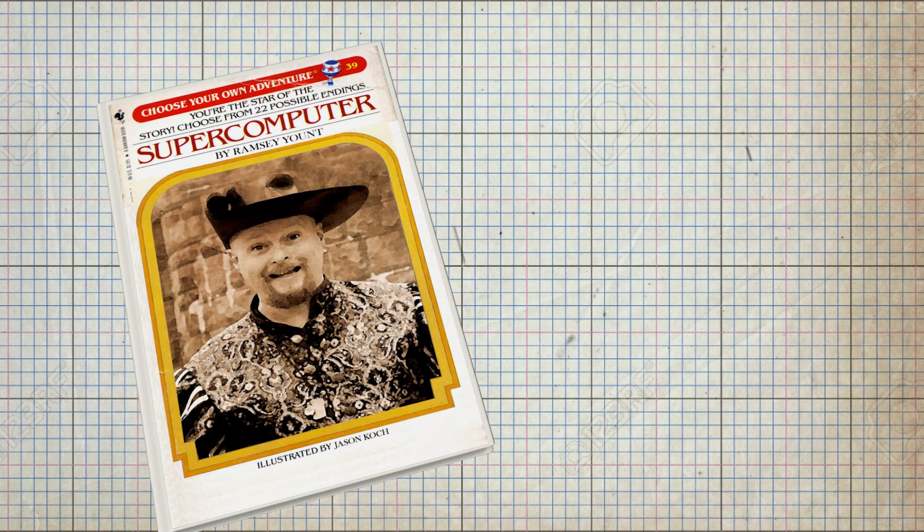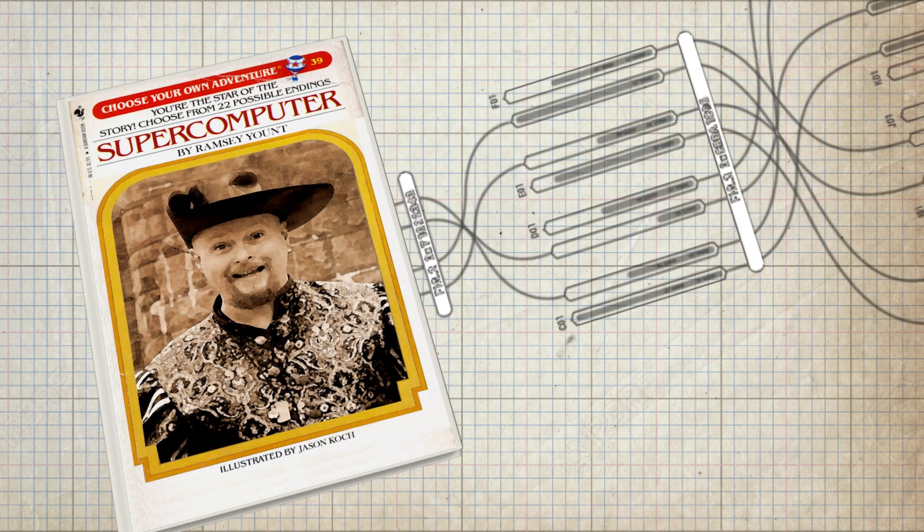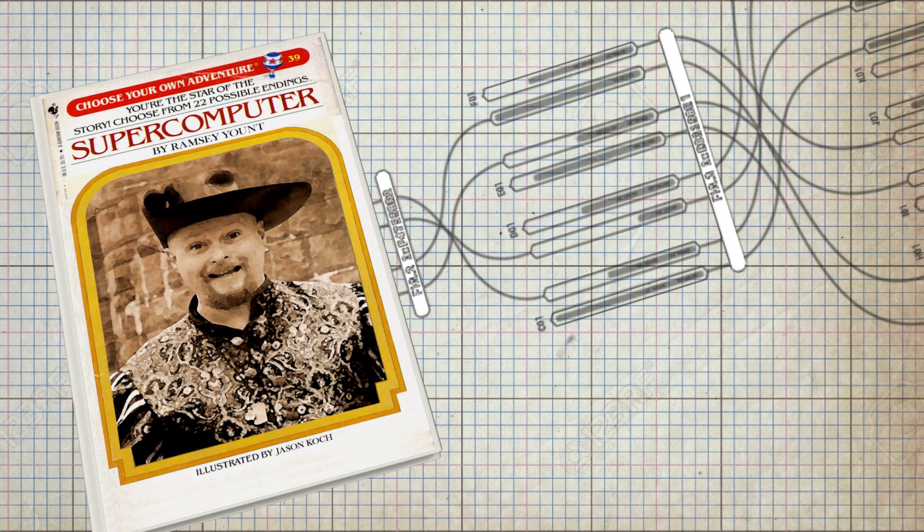The bigger the artificial neural network, the harder this is to do. Imagine taking one of those old choose-your-own-adventure books and mapping out every single possible sequence, and you start to get the idea.